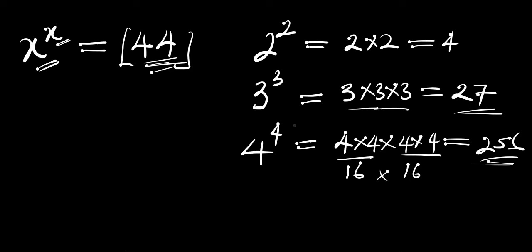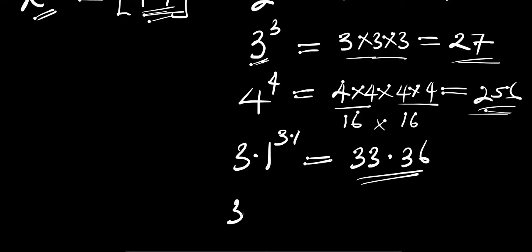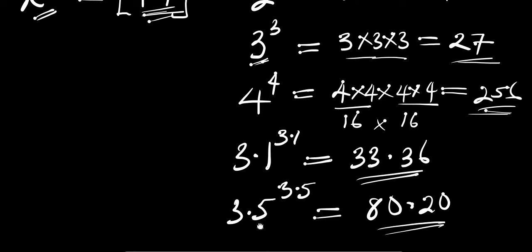Because of that, we need to limit our search to between 3 and 4, so something like 3.9, since 4 gives us 256. Let's consider 3.1 raised to the power of 3.1 — this gives us 33.36. That is still smaller than 44. Let's try 3.5 raised to the power of 3.5, which gives us 80.20. That is still bigger than 44.